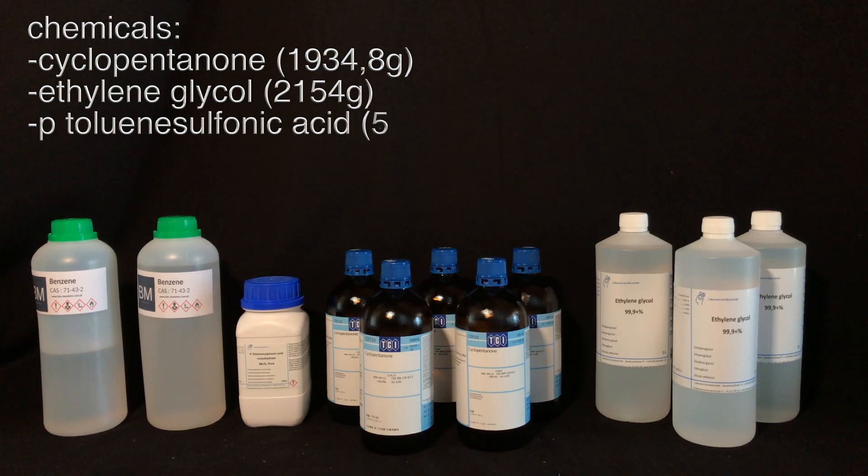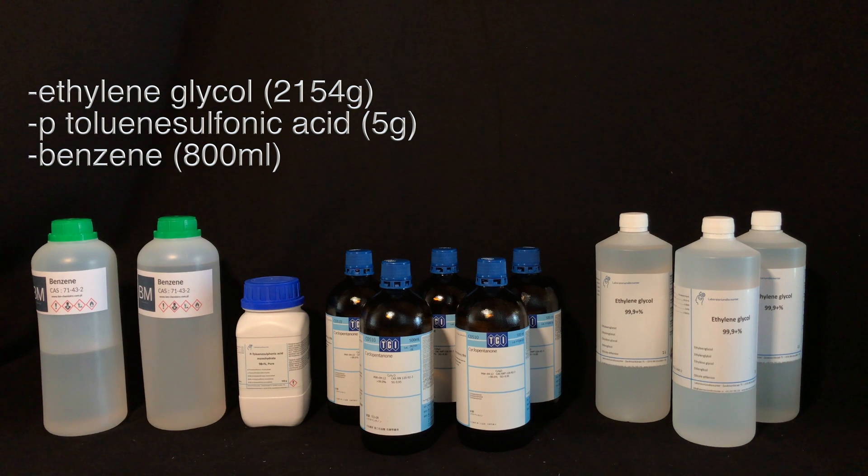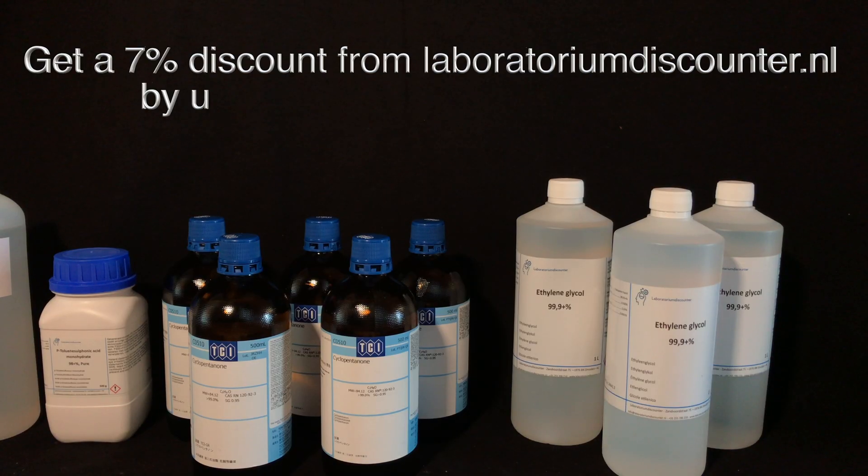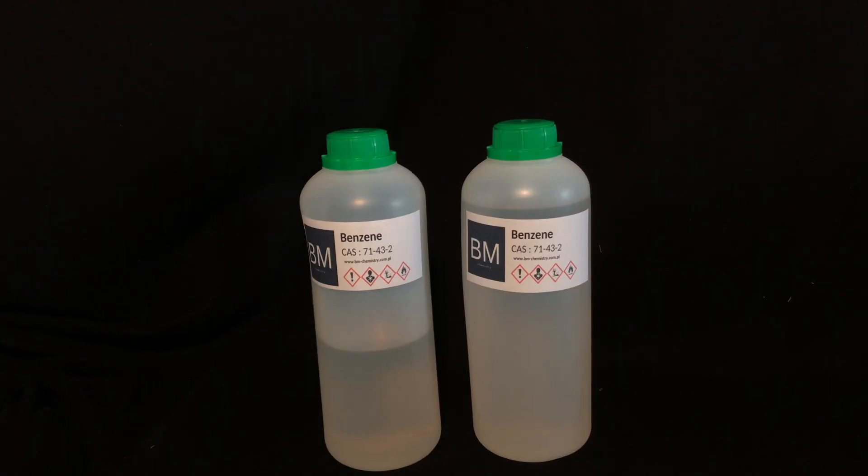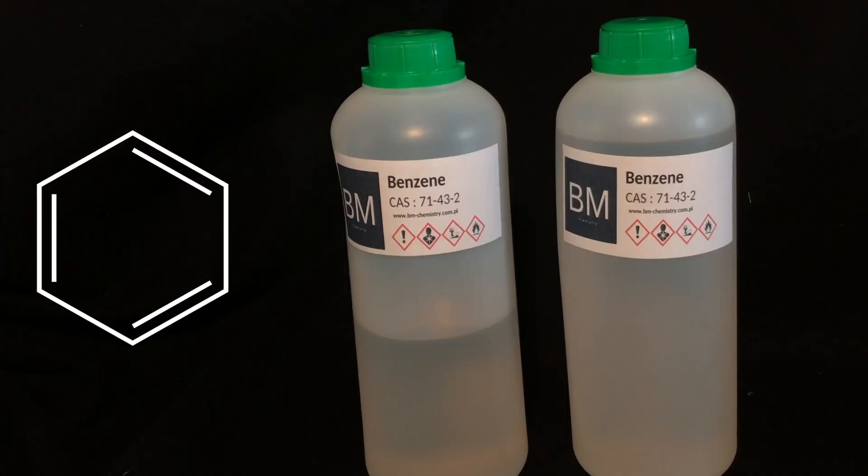For this synthesis we may only need four chemicals, but we're going to use a lot of each one. The most important ones are cyclopentanone, ethylene glycol, and p-toluenesulfonic acid to act as a catalyst. The reaction creates water and we will want to remove that, and therefore we're going to use an azeotropic distillation.